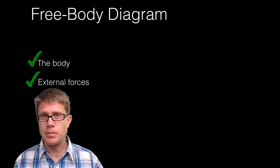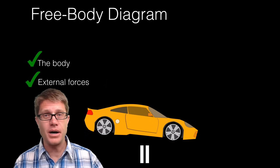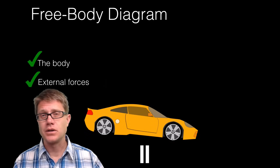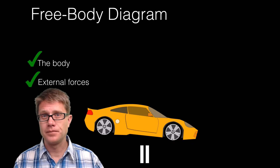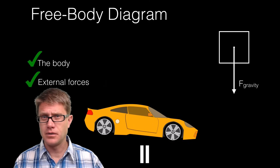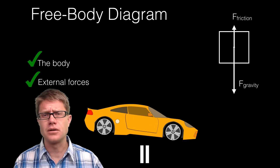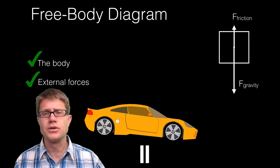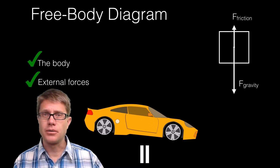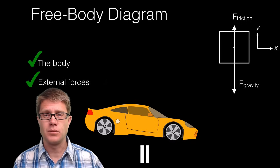Let's try another one: just the body and external forces. Now we have a car that is falling to earth. What would be the free body diagram? We have the object and the force of gravity down. There is no normal force — that is why it is accelerating down. But we do have a frictional force in the other direction: air resistance opposing that motion. Net acceleration is down, so you set up a coordinate system like this.